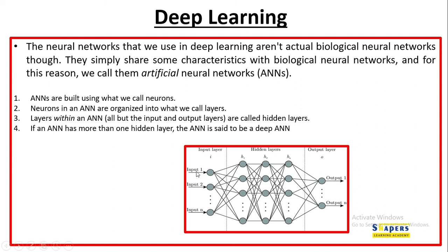Artificial neural networks are not the same as brain neural networks. They are built using neurons organized into layers. The layers between the input and output — labeled H1 to Hn — are called hidden layers. Depending on the complexity of the learning requirement, the number of layers increases or decreases. If an artificial neural network has more than one hidden layer, we call it a deep neural network.